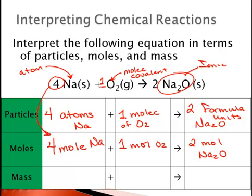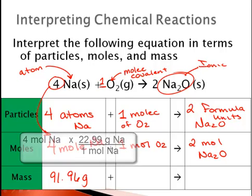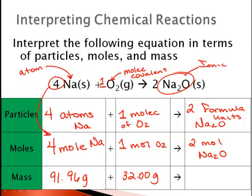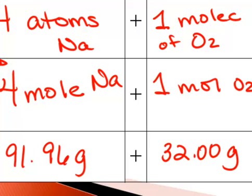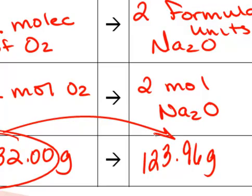If we consider the mass, the mass of 4 moles of sodium is 91.96 grams, and the mass of 1 mole of oxygen is 32.00 grams. The mass of 2 moles of sodium oxide is 123.96 grams. So again we see that 91.96 plus 32.00 equals 123.96 — conservation of mass holds.